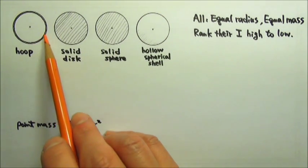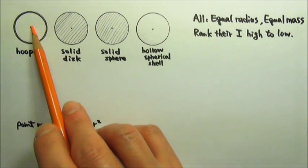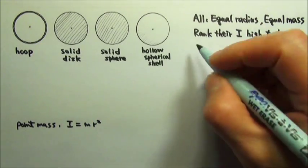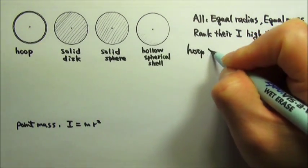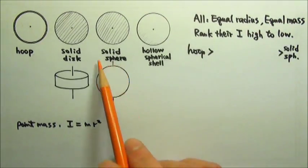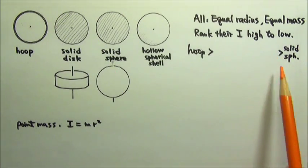Since the hoop has all its mass far away from the axis, the hoop has the largest rotational inertia. The solid sphere has the smallest rotational inertia.